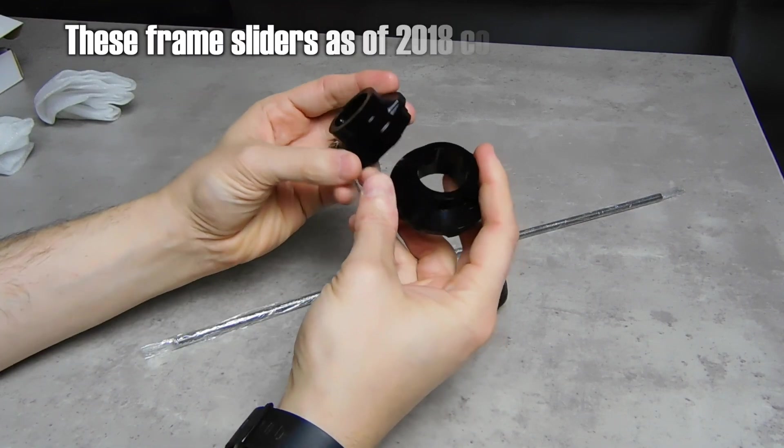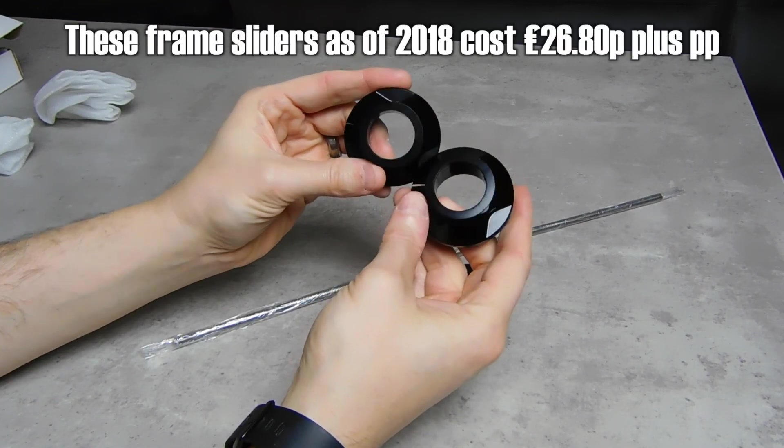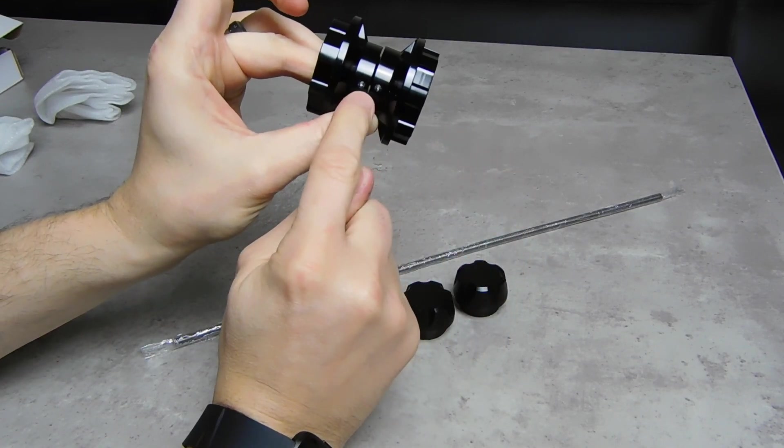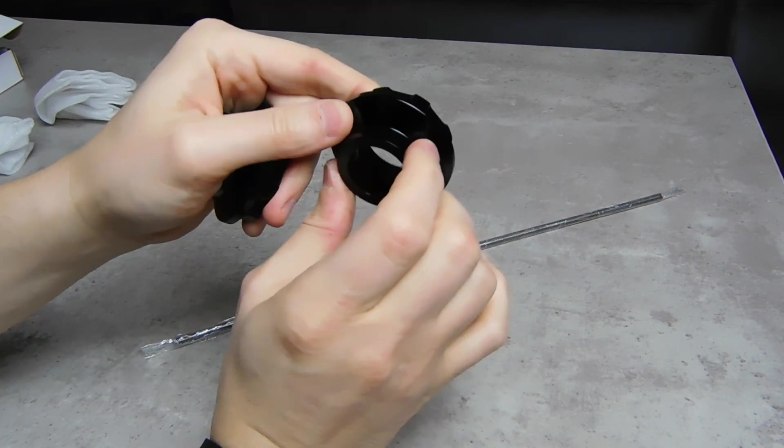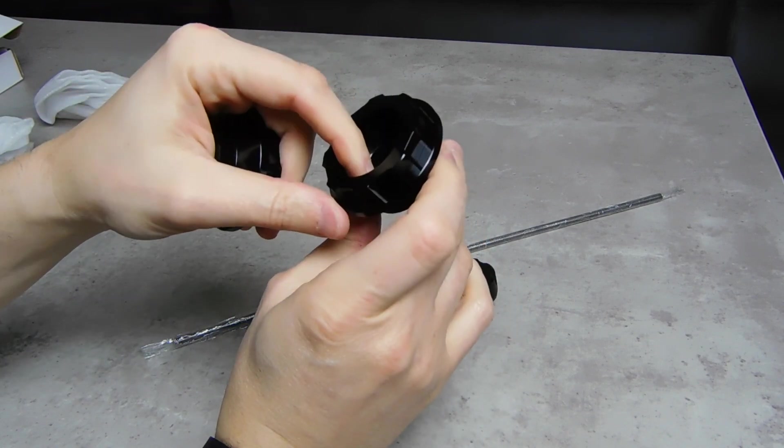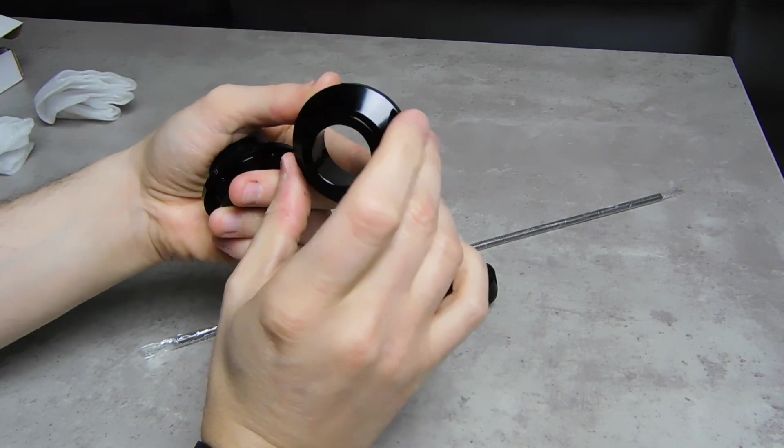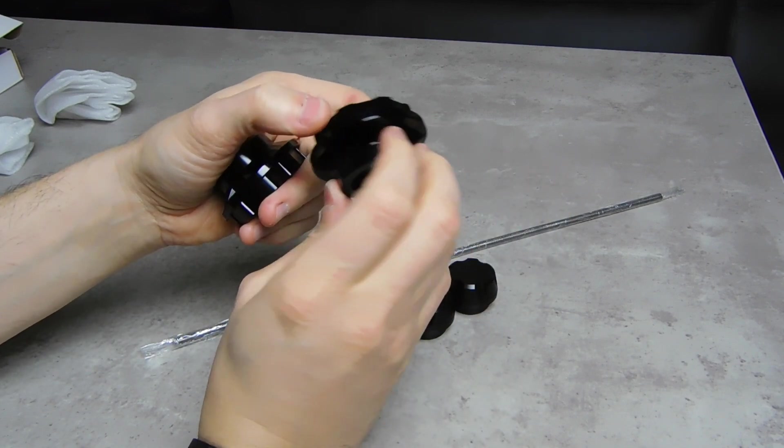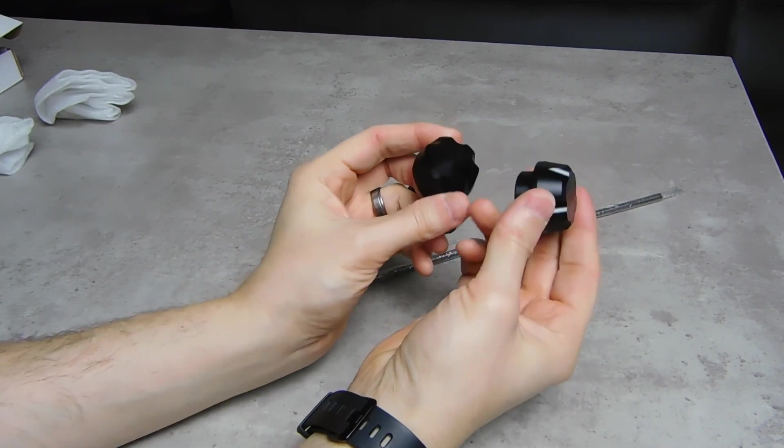Overall they look identical. There's no difference between them. They have two grub screws in the side there. These are the parts that go onto the rear swing arm, into the holes that you have on the back there. They should fit fairly snug.